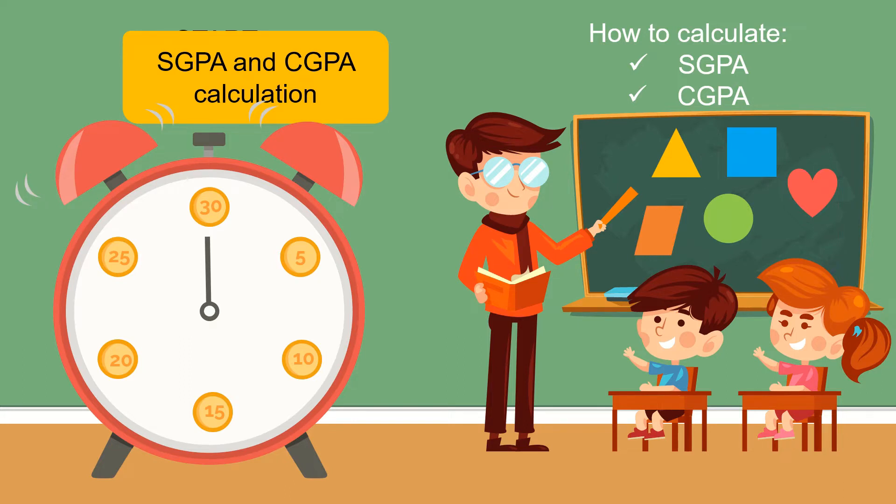So what is CGPA and what is SGPA? SGPA is Semester Grade Point Average and CGPA is Cumulative Grade Point Average. SGPA is calculated for every semester. CGPA is accumulation of SGPA. So now without any further ado, let's get started with how to calculate SGPA.